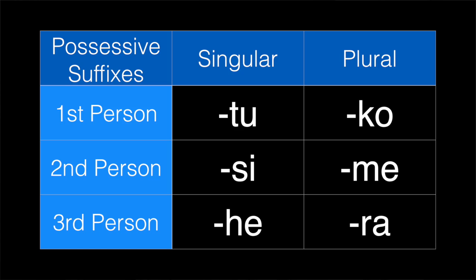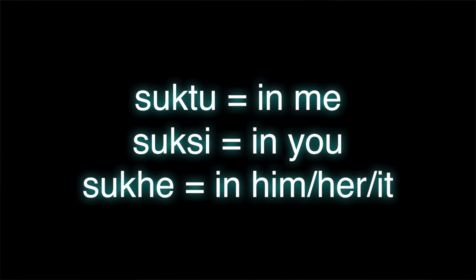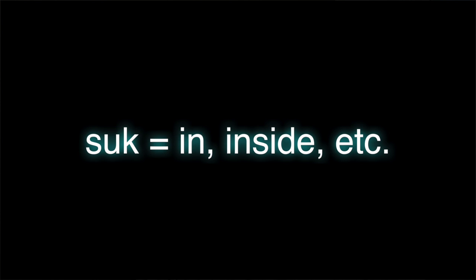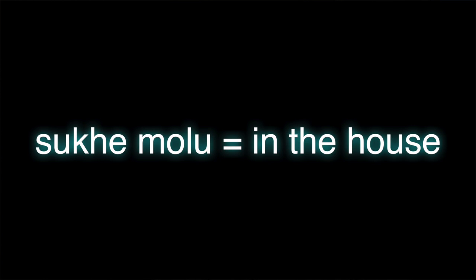The way this usually happens in languages is you first need a set of suffixes that have to do with person. So: 'du' means me, 'si' means you, 'he' means he/she/it. When you say 'in it,' you would say 'sukhe.' You have this little suffix — it's a bound form that attaches to the preposition. If you wanted to say 'in the house' (house is 'molu'), you don't say 'suk molu' and then modify the noun with case. Instead you say 'sukhe molu.' Sukhe becomes like 'in it' — that's the thing that has marking, and molu is completely and totally unmarked.